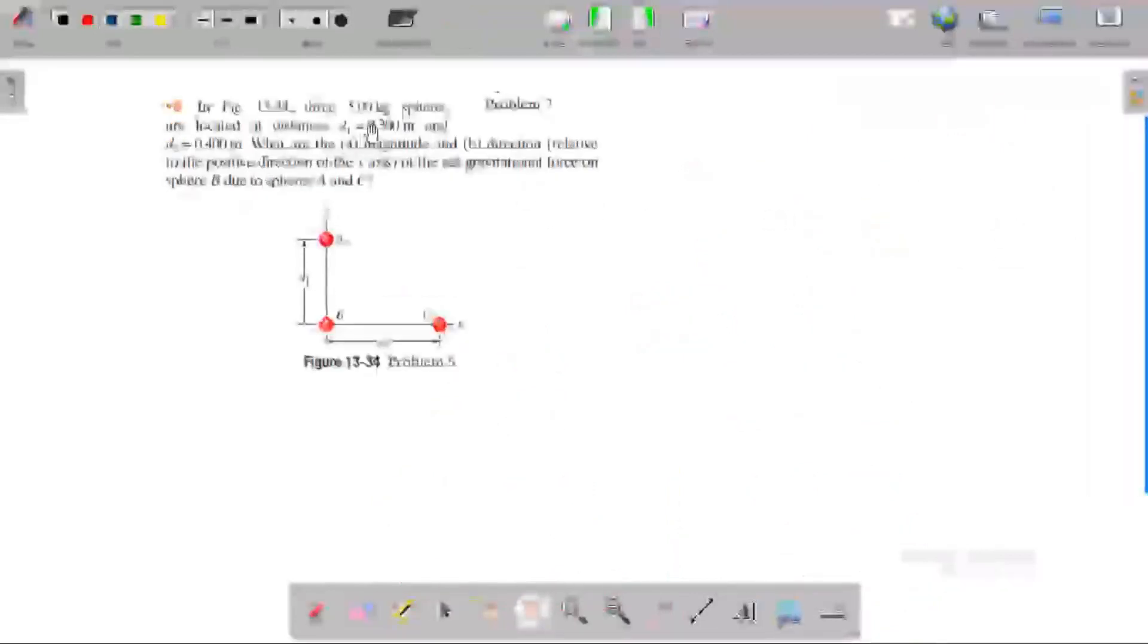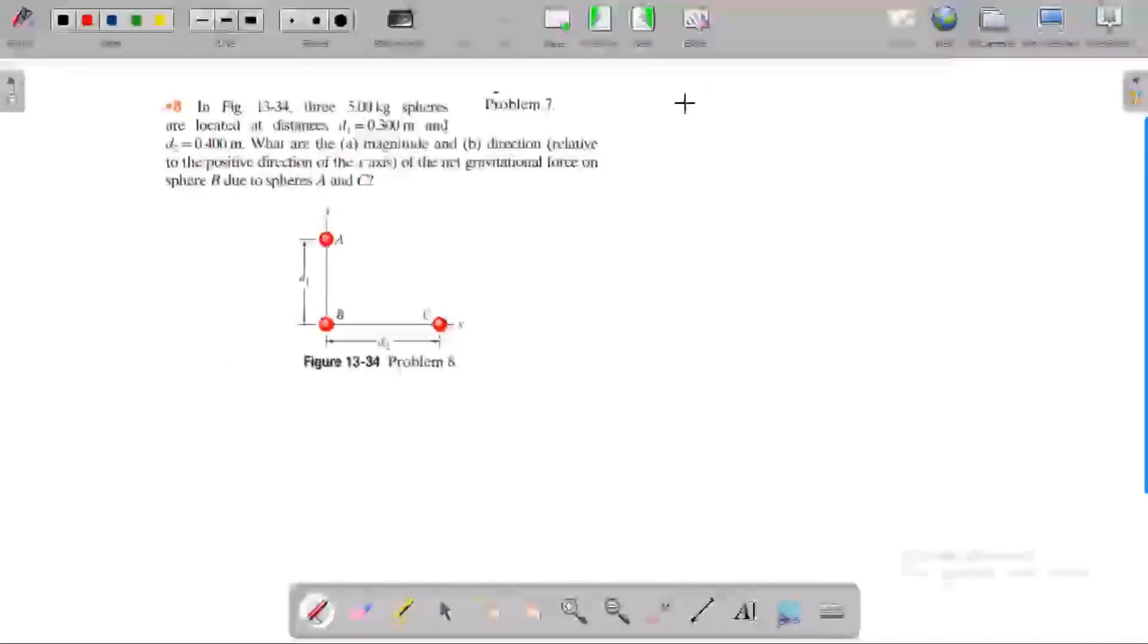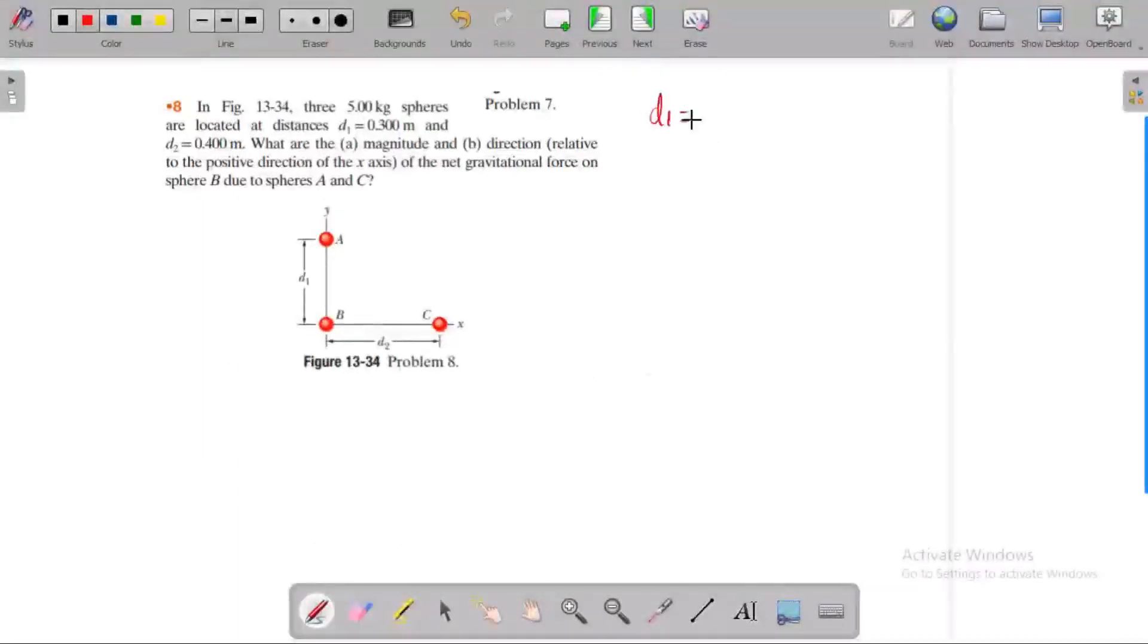In figure 13-34, three 5-kilogram spheres are located at distances d1 and d2. What is the value of d1? d1 equals 0.3 meters, d2 equals 0.4 meters. What we need to find is the mass of all particles: mA equals mB equals mC, all equal to 5 kg.